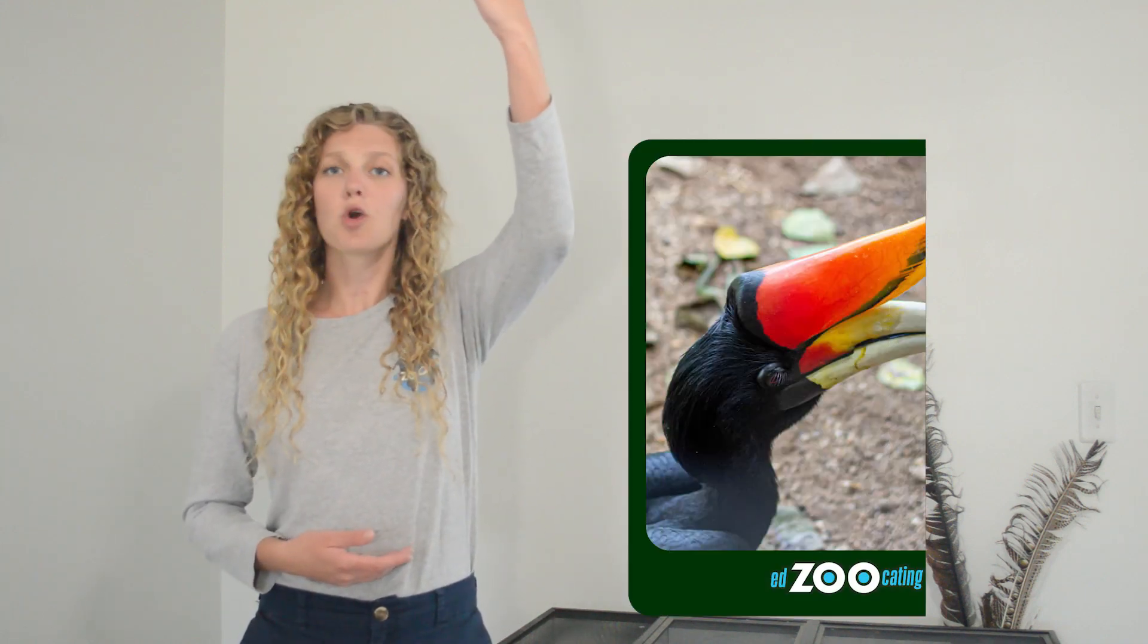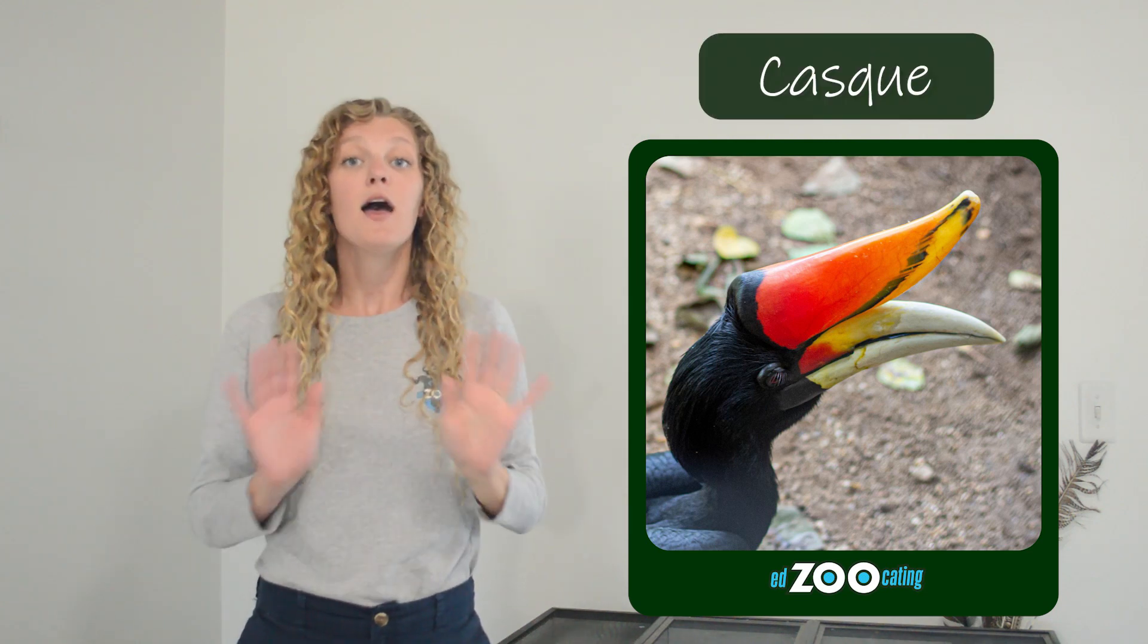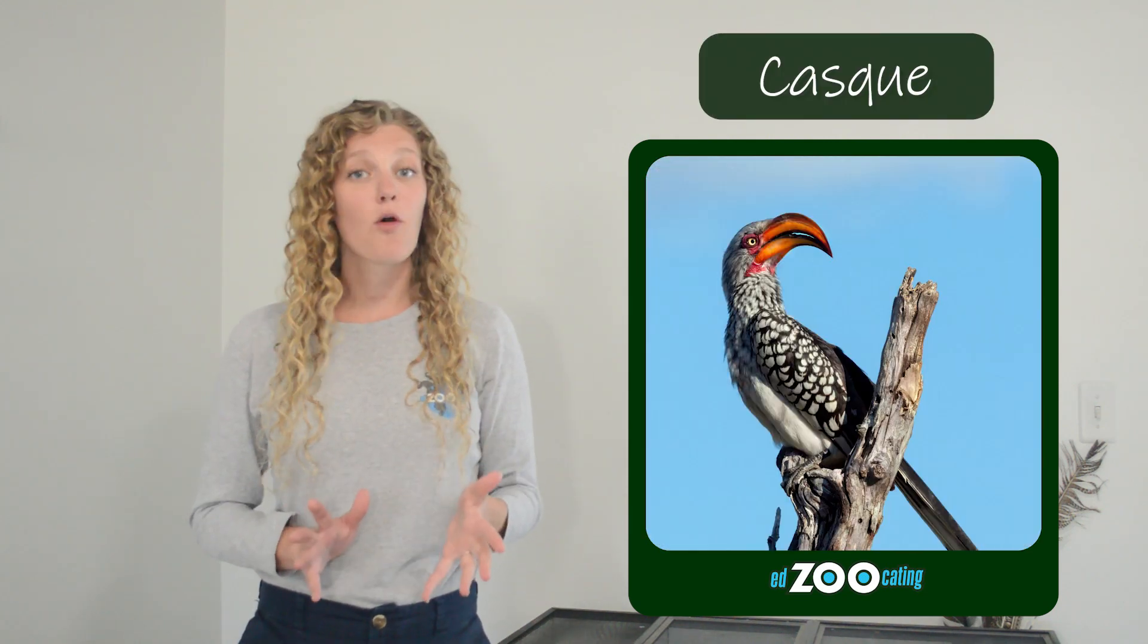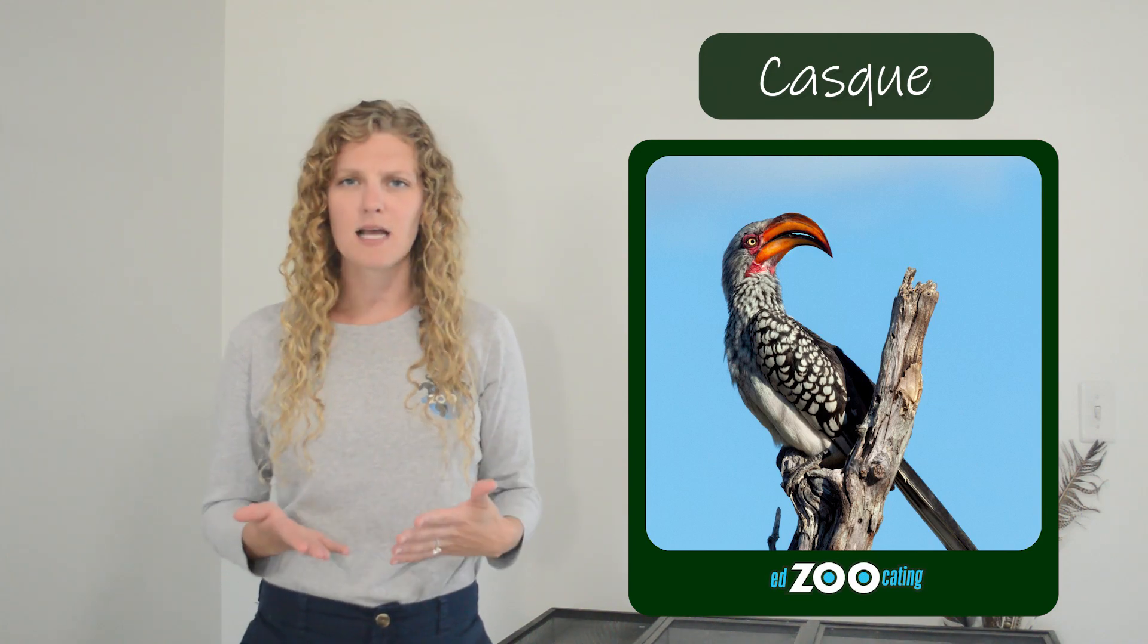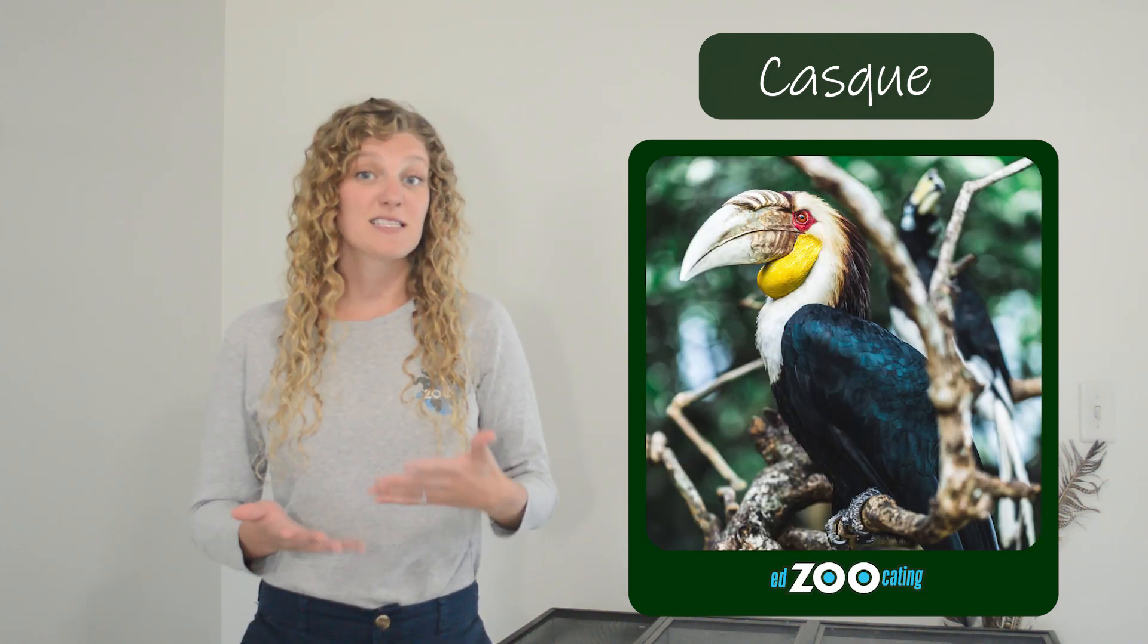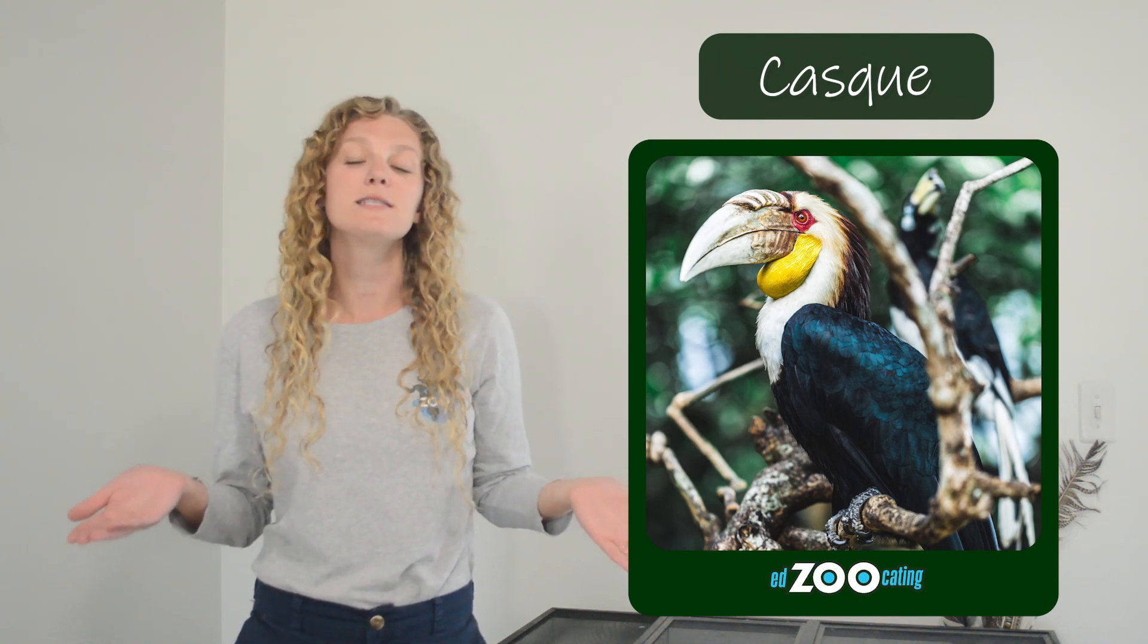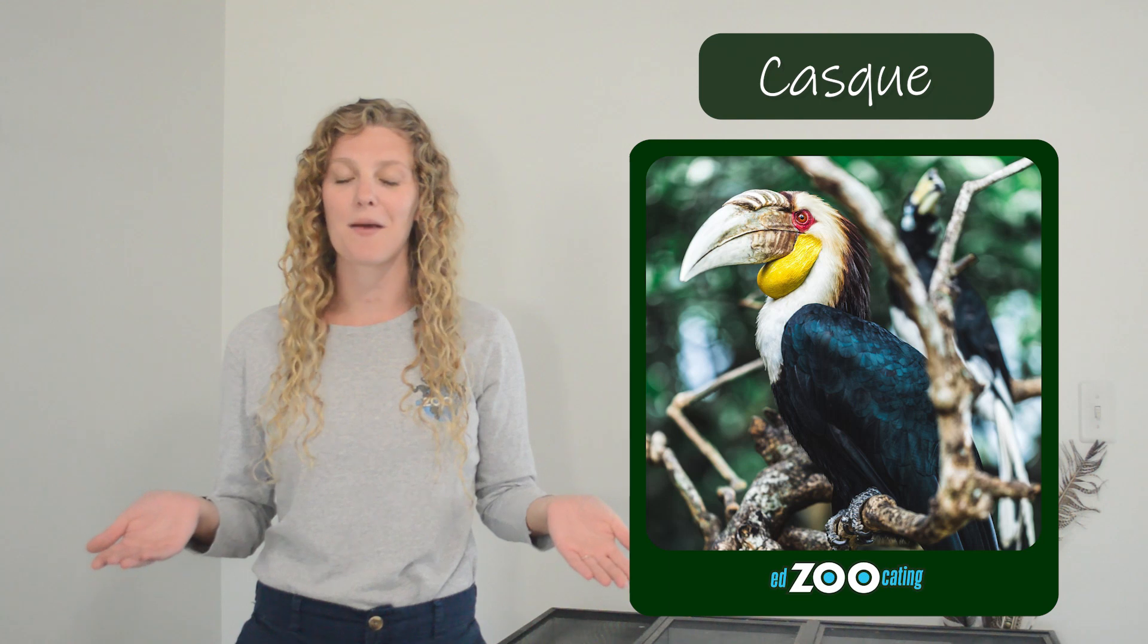Hornbills, which are a family of birds, get their name because many species in this family have a very large horn-like structure on top of their beak, which we call a casque. Not every species of hornbill has a casque and on some species it's quite small. Scientists hypothesize that a casque can be used for lots of different things depending on what species of hornbill we're talking about.